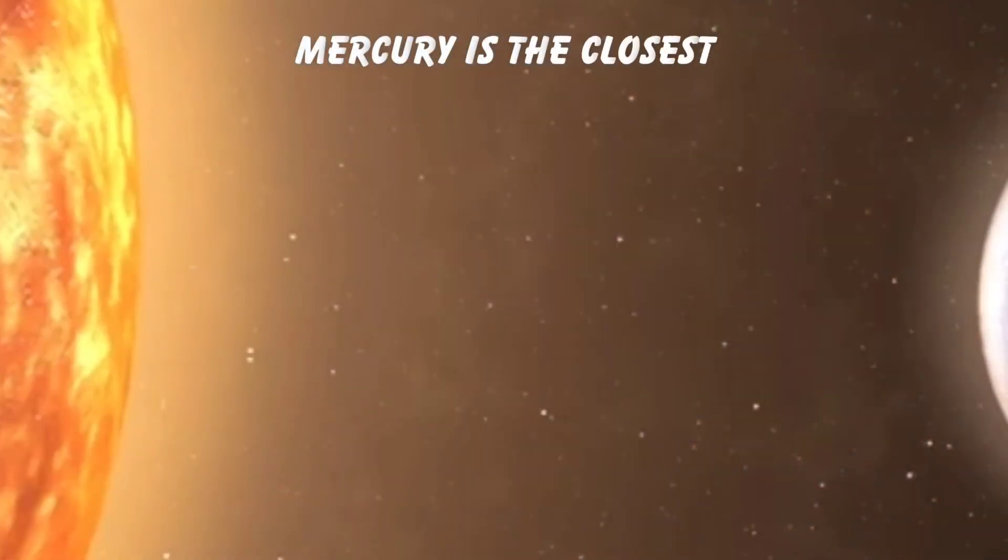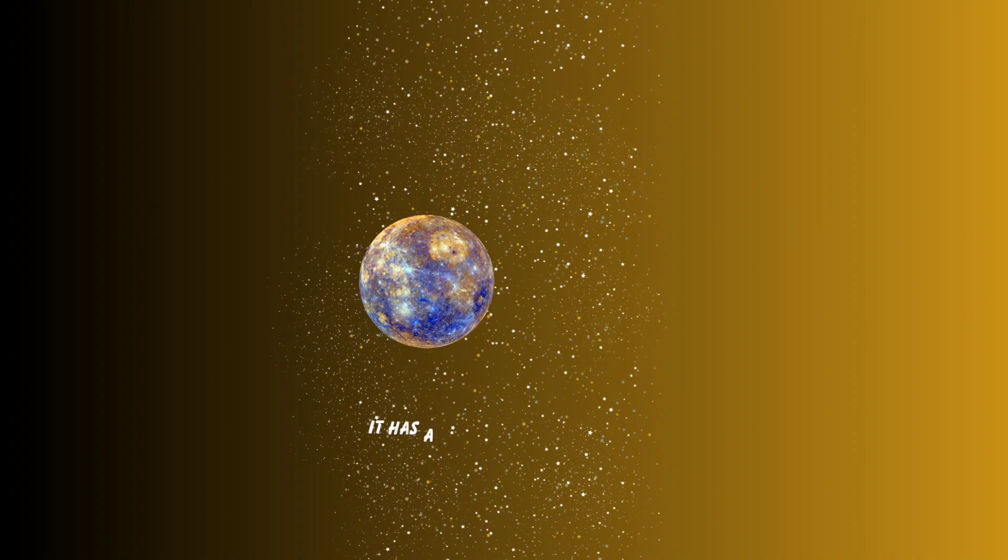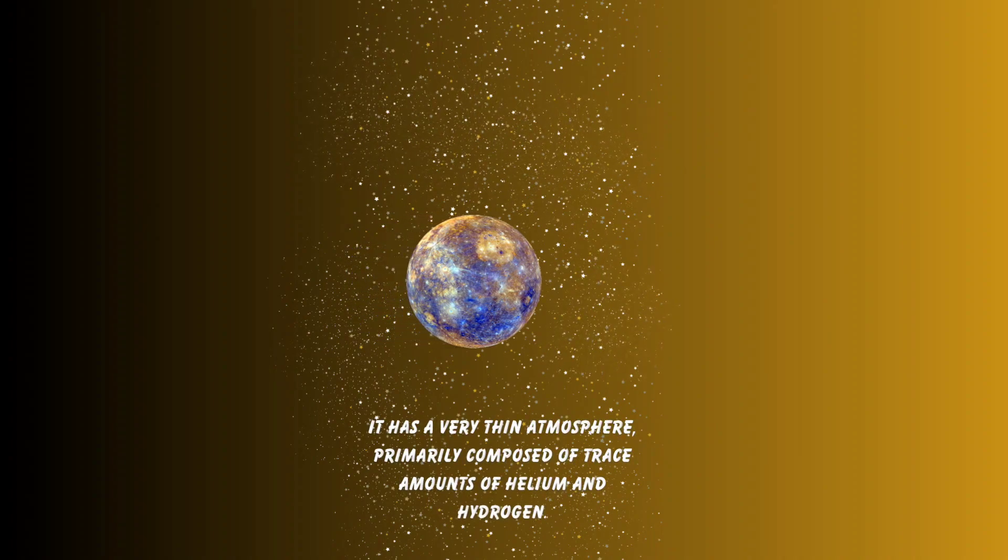Some facts about Mercury. Mercury is the closest planet to the sun in our solar system. It has a very thin atmosphere primarily composed of trace amounts of helium and hydrogen.